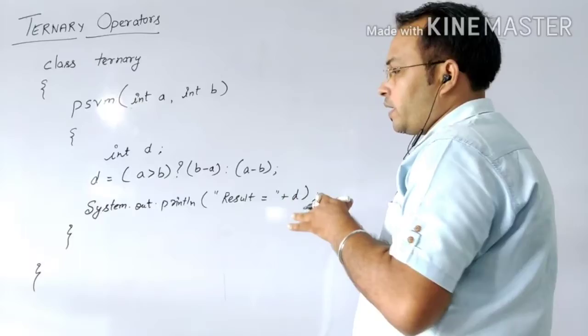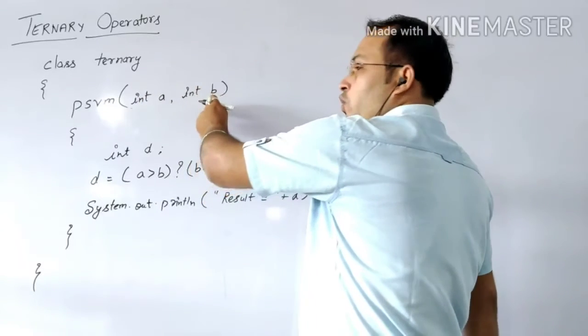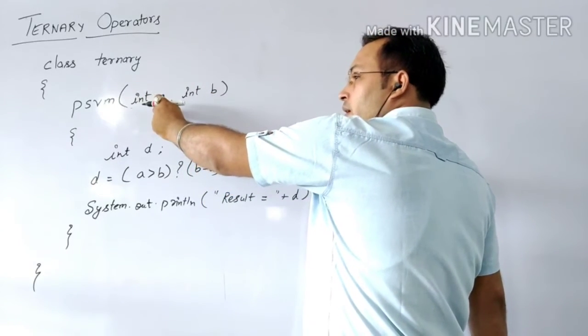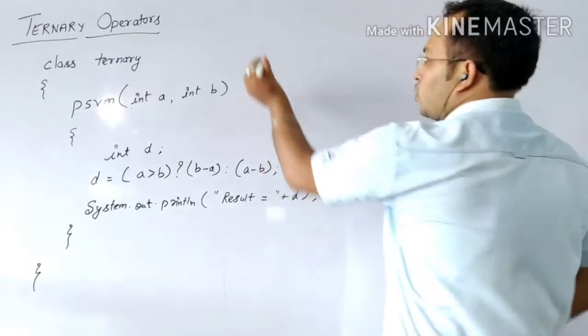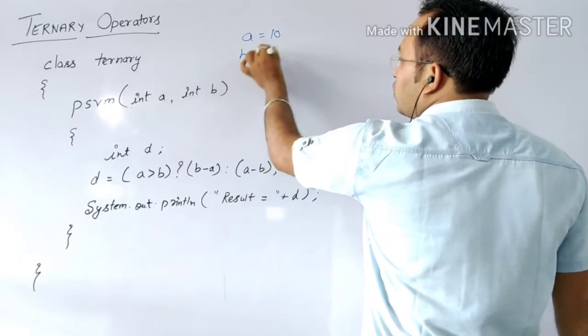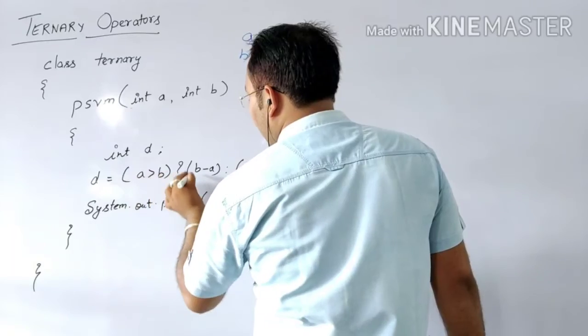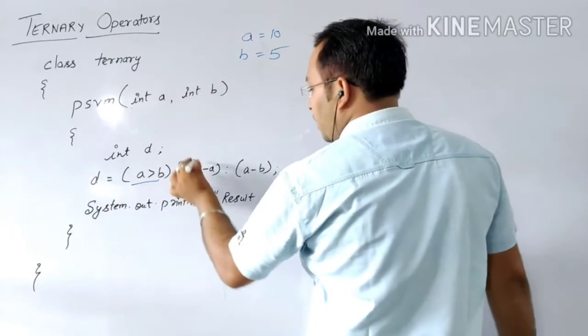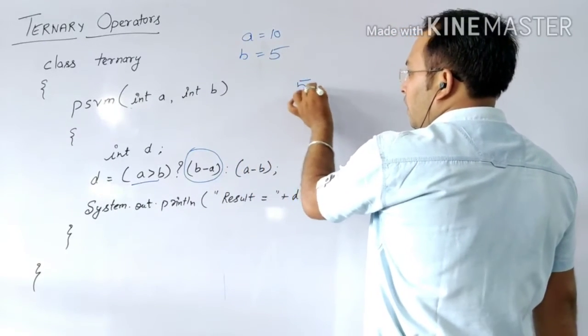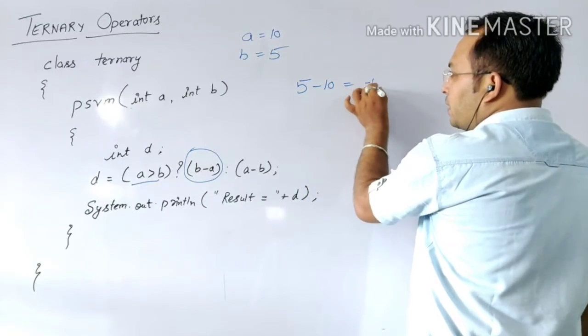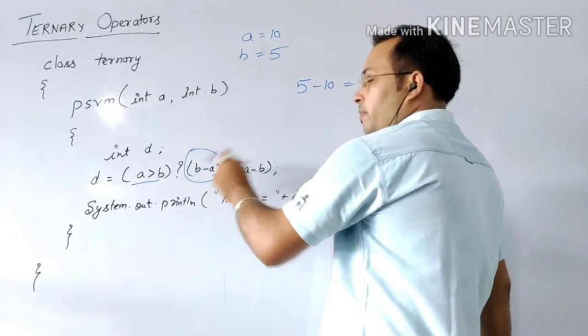Whatever value you will give. If you will give a greater than b, then it will take this one. Suppose I am testing the condition. Suppose you have given a equals to 10 and b equals to 5. In that situation, what you will get? This part will execute. Because a greater than b, so this part will execute. So 5 minus 10, you will get minus 5 as a value. Because here a greater than b, and in a greater than b I said what? b minus a.